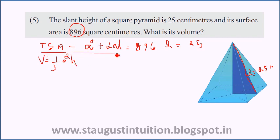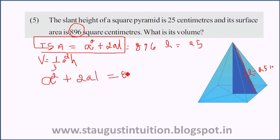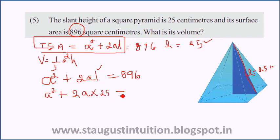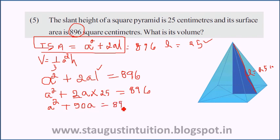The total surface area is a squared plus 2aL equals 896. Substituting L equals 25: a squared plus 2 times 25 times a, that is a squared plus 50a, equals 896.